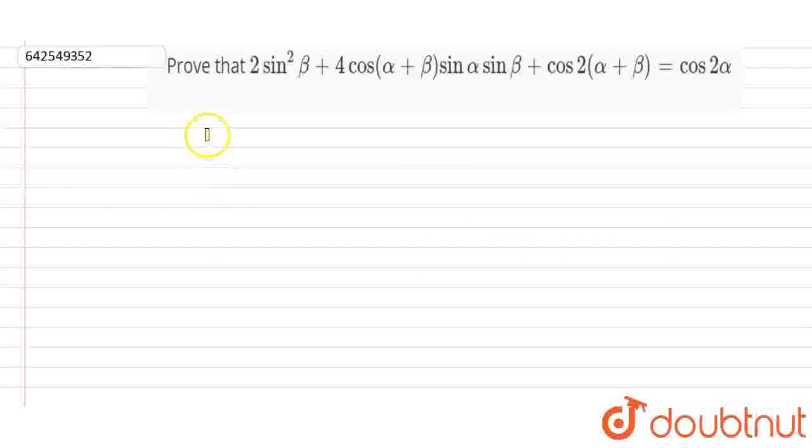The given question is: prove that 2sin²β + 4cos(α+β)sinαsinβ + cos2(α+β) = cos2α. We have to prove LHS equals RHS. Let's prove it. This is LHS and this is RHS.